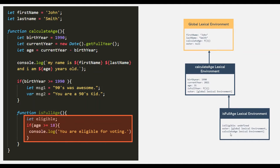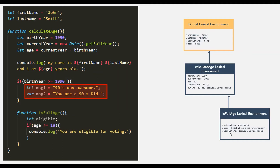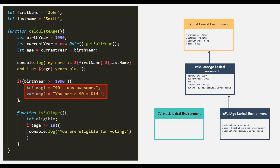In this program, we also have a scope created by this if block, so a new lexical environment will be created for this if block. Inside the if block, we are declaring the message1 variable using the let keyword, which means message1 is block-scoped and will be accessible only inside this block. The scope for message1 is this block, so message1 will be stored in the lexical environment of this if block. Then we have the message2 variable, which is declared using the var keyword. We learned that a variable created using var has function scope, so message2 will not get stored in the lexical environment of this if block.